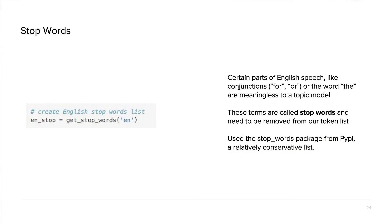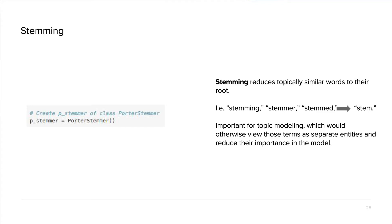Stop words: certain parts of English speech like conjunctions — for, or, the — are meaningless to a topic model. These are called stop words and should be removed from our token list. We use the stop words package from PyPI, which is a relatively conservative list — there are lots of different stop word packages to explore. The last major preprocessing step is stemming. Stemming reduces topically similar words to their root — for example, stemming, stemmer, and stemmed all reduce to 'stem.' This is important because topic models would otherwise view these as separate entities, reducing their importance. Stemming helped improve the accuracy and relevance of my topics.